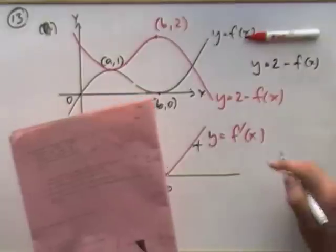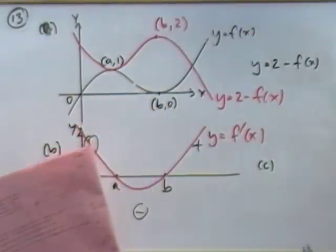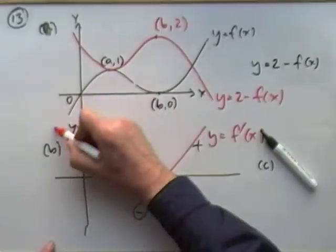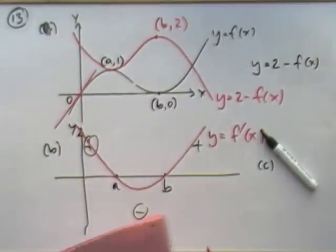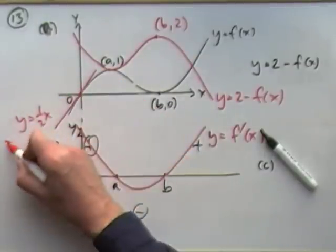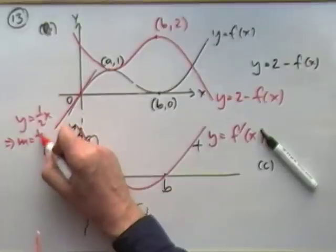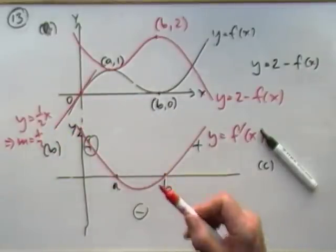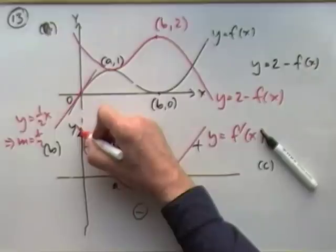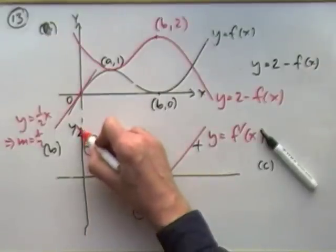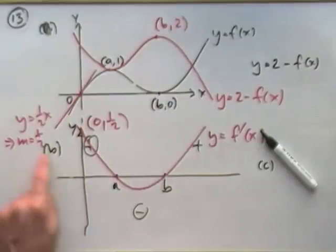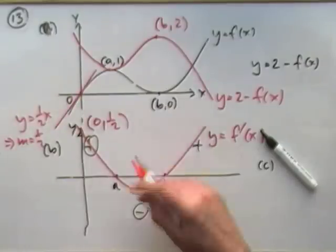Part c: the tangent to y equals f of x at the origin has the equation y equals a half x. That means the gradient is a half, and the gradient is the same as the value of the derivative. So that must mean that's the point (0, one half), because when x is zero the value of the gradient is a half. That's question 13.